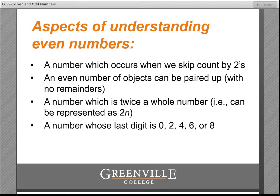That's the bottom bullet, and a lot of classrooms do that already. However, do the students understand why? That really isn't the full story because it doesn't reveal the underlying meaning. If we only stick with that, it's a mere label without meaning. We might also say that it is a number which occurs when we skip count by twos — that's the top bullet, and that's also true assuming we start with two. But that's also not the full idea. We get a richer understanding of what even numbers are by exploring the two middle ideas.